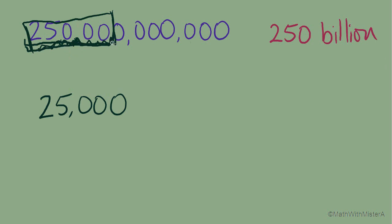And how many times would we need to multiply by 10 to create 250 billion? Let's see, times once, 2, 3, 4, 5, 6, 7 more times. So 25,000 times 10 to the 7th would equal 250 billion.